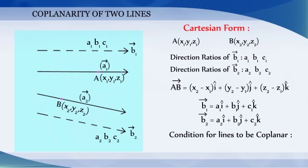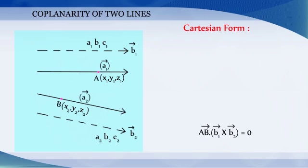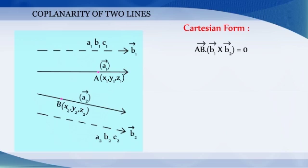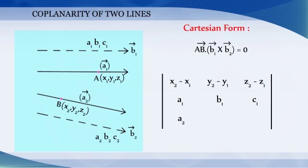The given lines are coplanar if and only if AB vector dot b1 vector cross b2 vector is equal to zero. Therefore, in Cartesian form we get the condition for the lines to be coplanar as the determinant of x2 minus x1, y2 minus y1, z2 minus z1, a1, b1, c1, a2, b2, c2 is equal to zero.